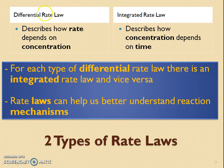So far we talked about the differential rate law — the rate law that describes how rate depends on concentration. However, concentration is also going to depend on time. In the very beginning, the concentration of a reactant decreases quickly because the reaction is happening quickly, and then slowly the reaction rate decreases because there's not as much reactant. So as the concentration of those reactants decreases, the products aren't being made as fast. For each type of differential rate law, there's also what's called an integrated rate law, and these rate laws help us better understand what's called a reaction mechanism.